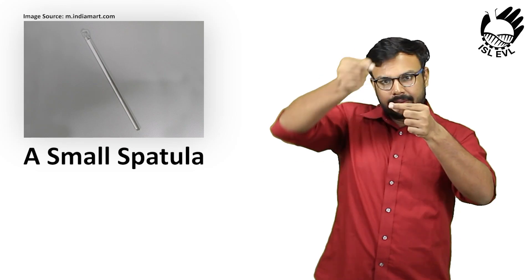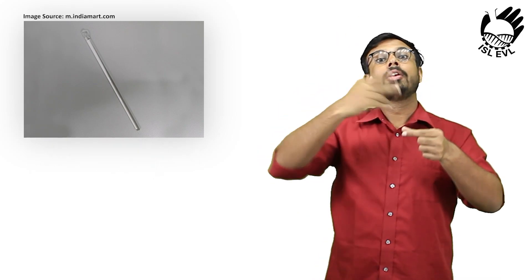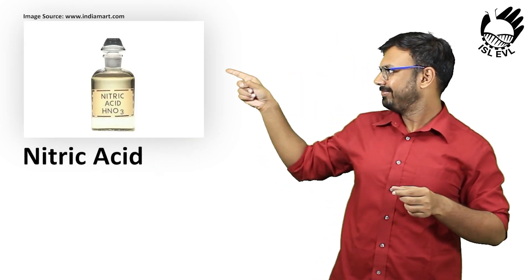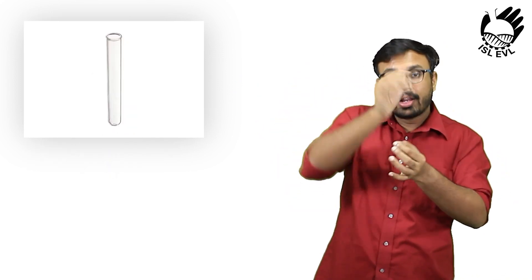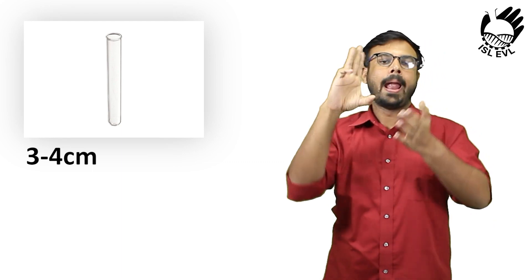Put a small spatula measure of the samples to be tested into a clean test tube. Add diluted nitric acid to a depth of about 3 to 4 cm.